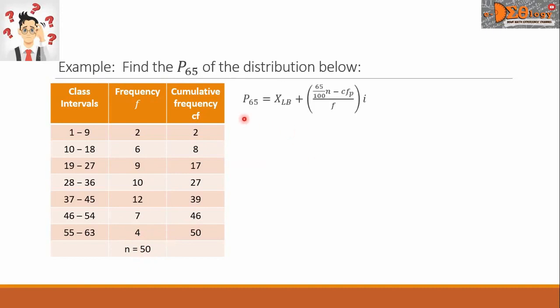Let us now write the formula for the 65th percentile. We can see here that this is 65 over 100, representing the 65 percent of the distribution. For step 1, let us find the P sub 65 class.